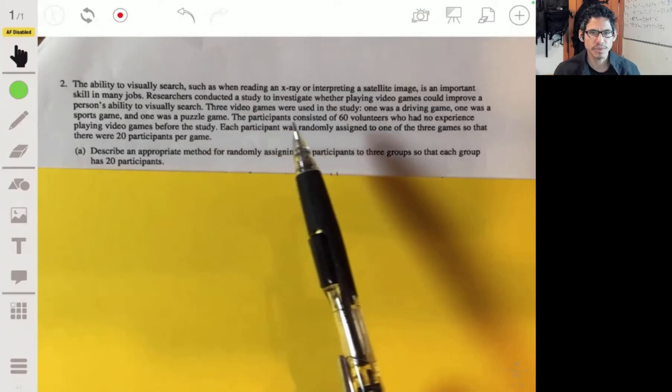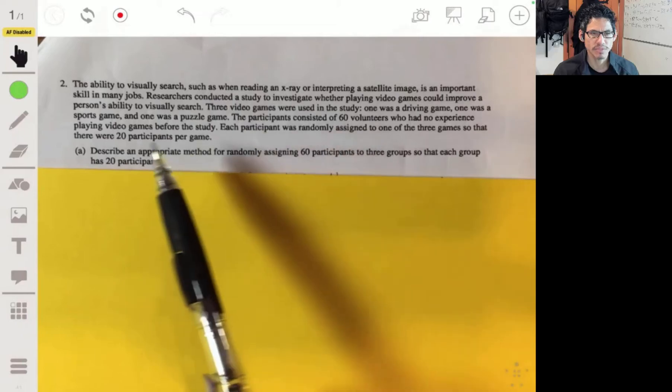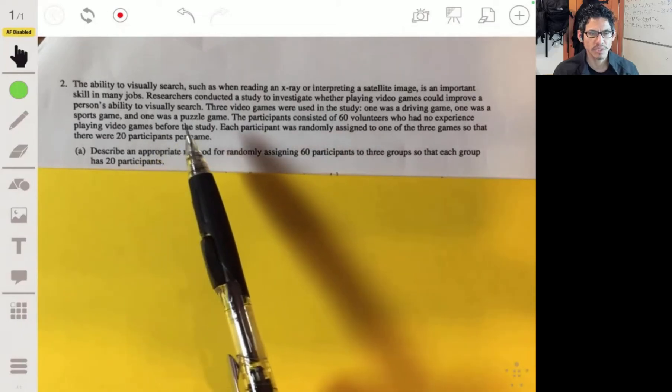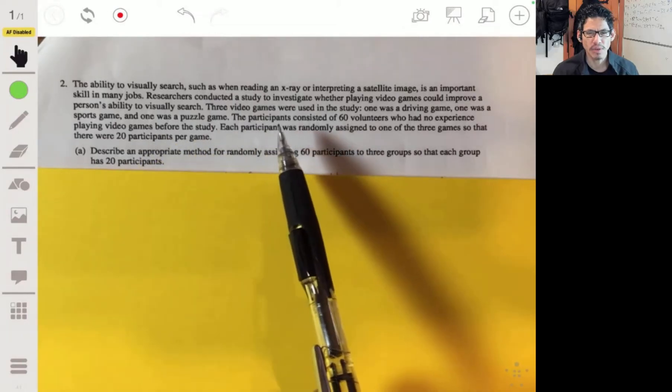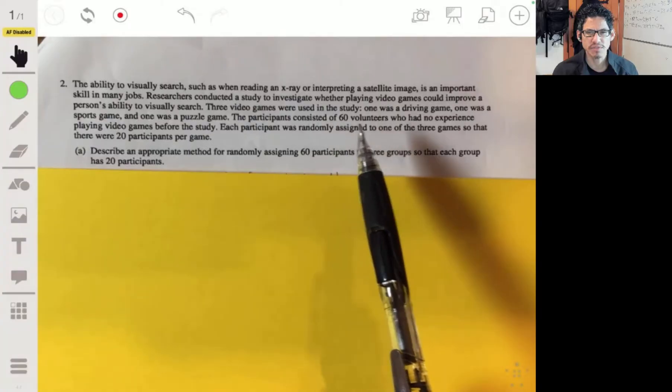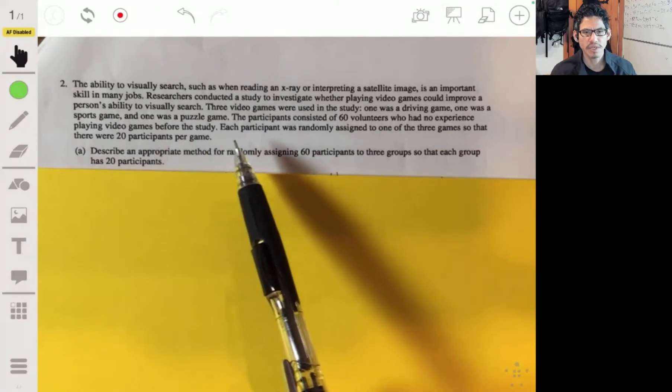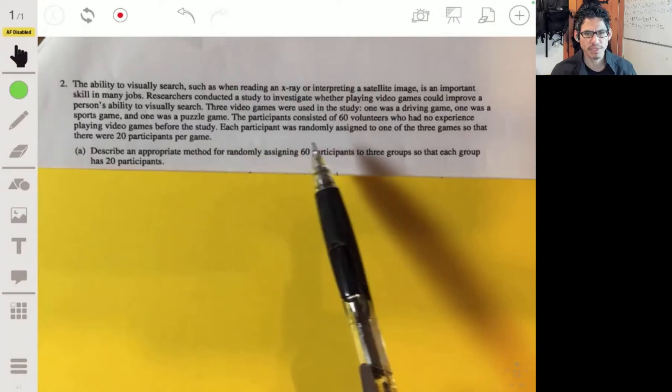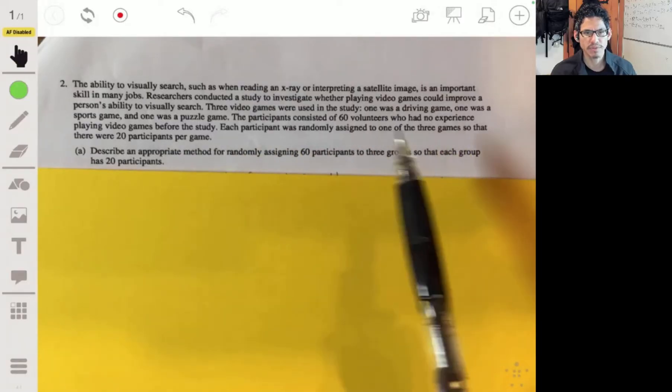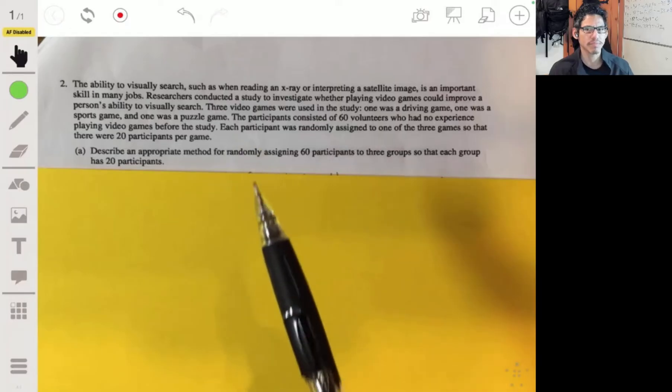Researchers conducted a study to investigate whether playing video games could improve a person's ability to visually search. Three video games were used in the study: one was a driving game, one was a sports game, and one was a puzzle game. The participants consisted of 60 volunteers who had no experience playing video games before the study. Each participant was randomly assigned to one of the three games so that there were 20 participants per game.